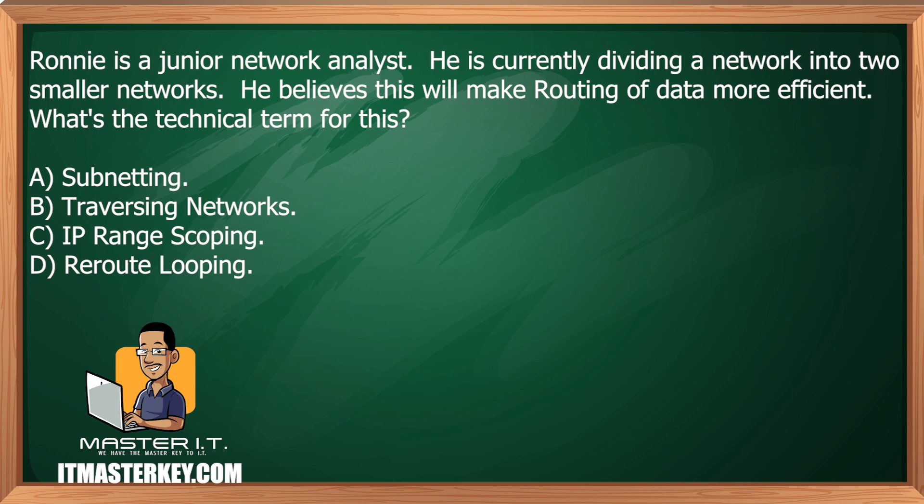Ronny is a junior network analyst. He is currently dividing a network into smaller networks. He believes this will make routing of data more efficient. What's the technical term for this? Subnetting, traversing networks, IP range scoping, or reroute looping.